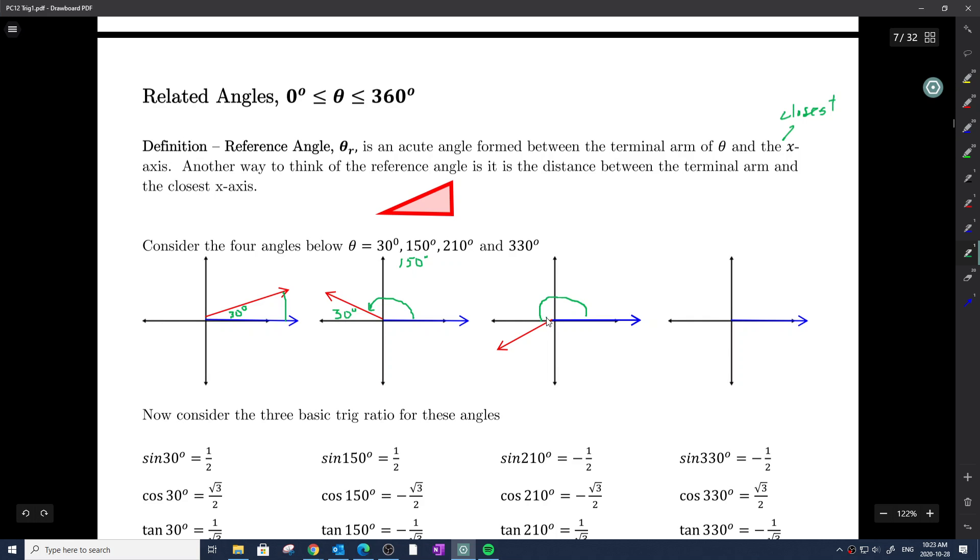Similarly, there's 210 degrees. If I ask myself how far is this away from the closest x-axis, remember that this is 180 degrees, the horizontal is 180 degrees. If 210, that means that we go an additional 30 degrees. So we are 30 degrees away from the x-axis.